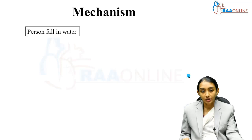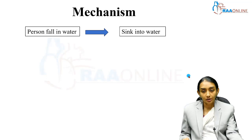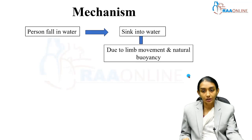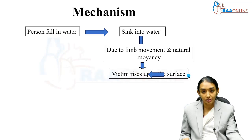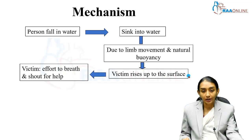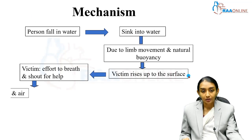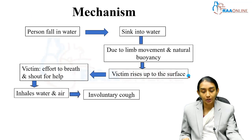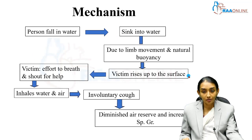What is the mechanism behind drowning? First, the person falls into the water and sinks. Due to the natural buoyancy of the body, the person rises to the surface and makes an effort to breathe or shout for help, opening their mouth. There is inhalation of air along with entrapment of water, and deep exhalation as well. This causes both water and air to enter into the airways, resulting in involuntary cough, which leads to diminished air reserve and increased specific gravity. Finally, the victim sinks again.